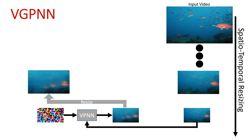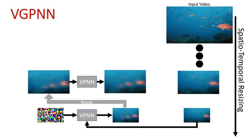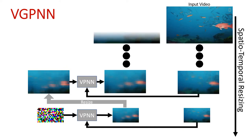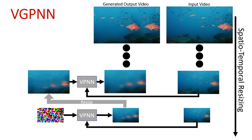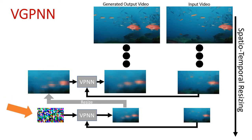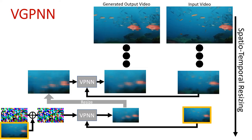The output is then resized and fed into the next level, where each spatial-temporal patch is replaced with its nearest neighbor from the corresponding level of the pyramid. The same is carried out along the levels of the pyramid until at the top we get the generated output video. We find that noise that is constant in time improves temporal coherence. We also add the coarsest scale of the original video to the noise in order to retain the global structure better.